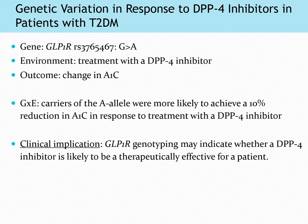DPP-4 inhibitors are all brand name only, so they're pretty expensive. It would be nice to have an idea of how likely a patient is to benefit from the drug before spending money on it, especially because we have a lot of alternative options for diabetes treatments. A clinical implication is that GLP1R genotyping could indicate whether or not a DPP-4 inhibitor is likely to be therapeutically effective for a given patient.